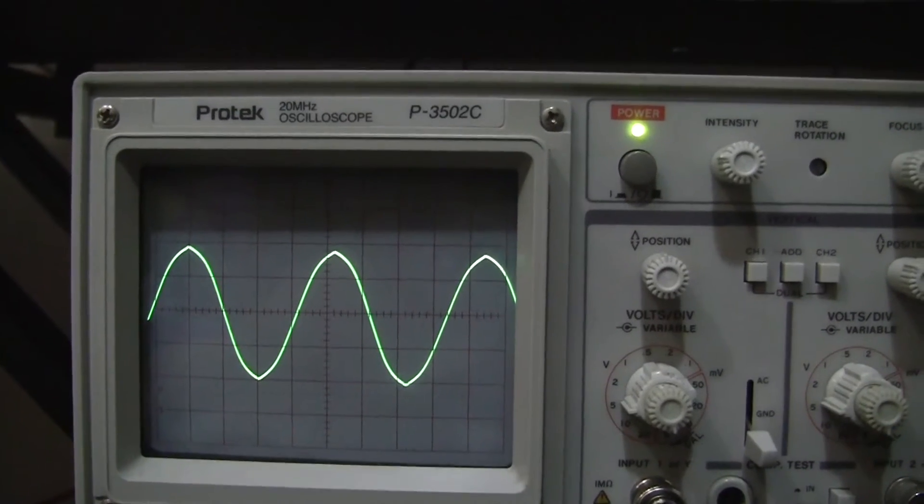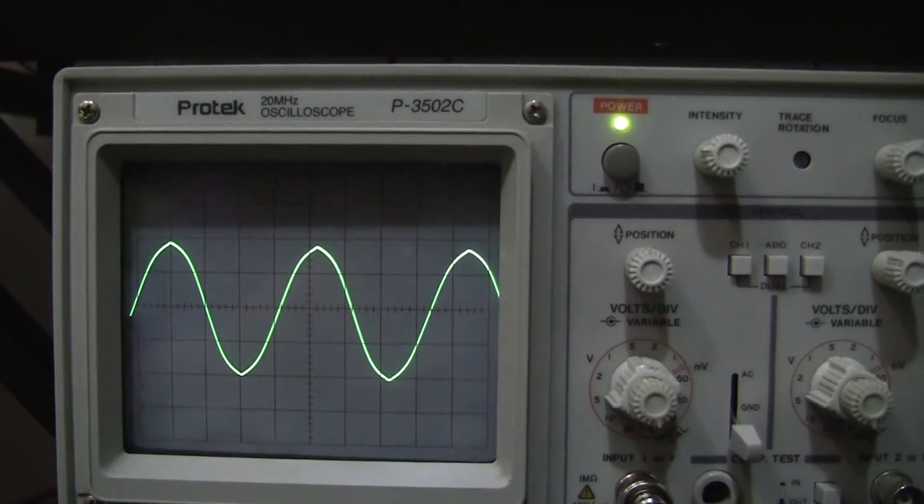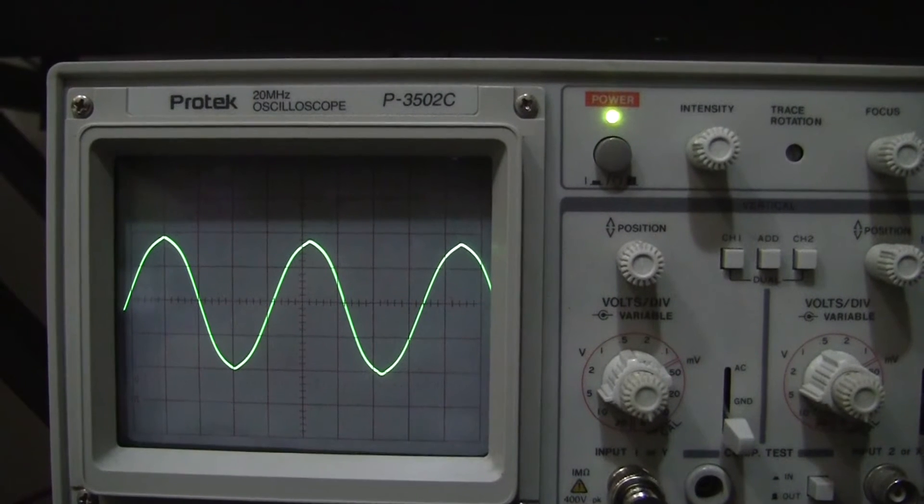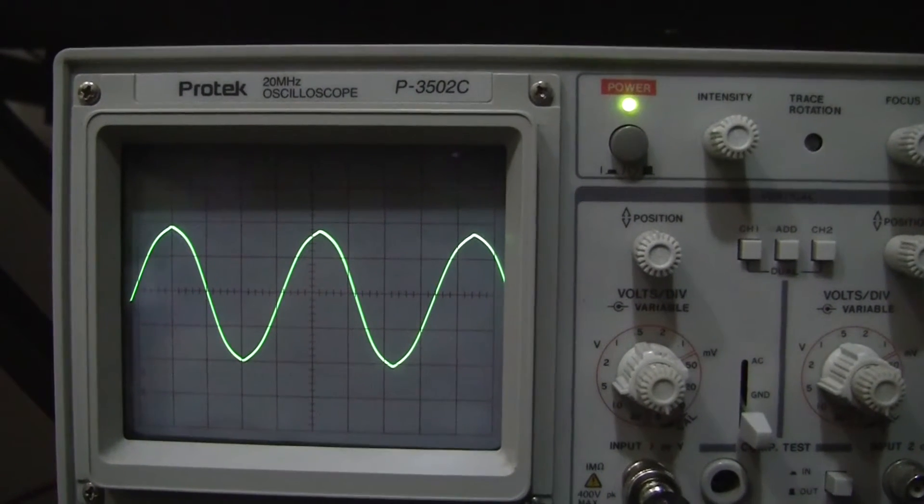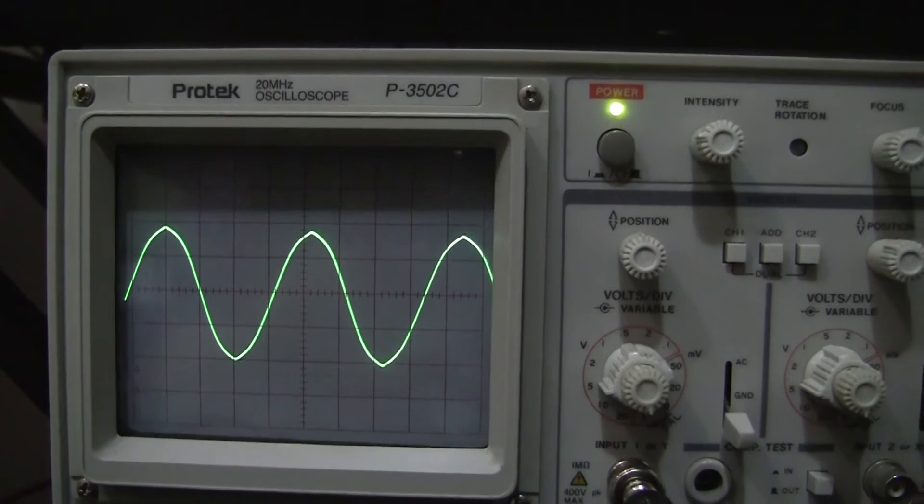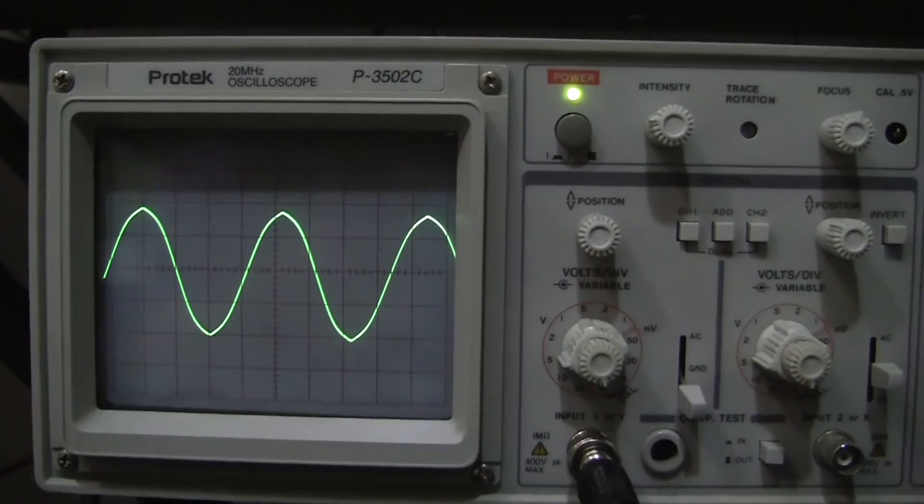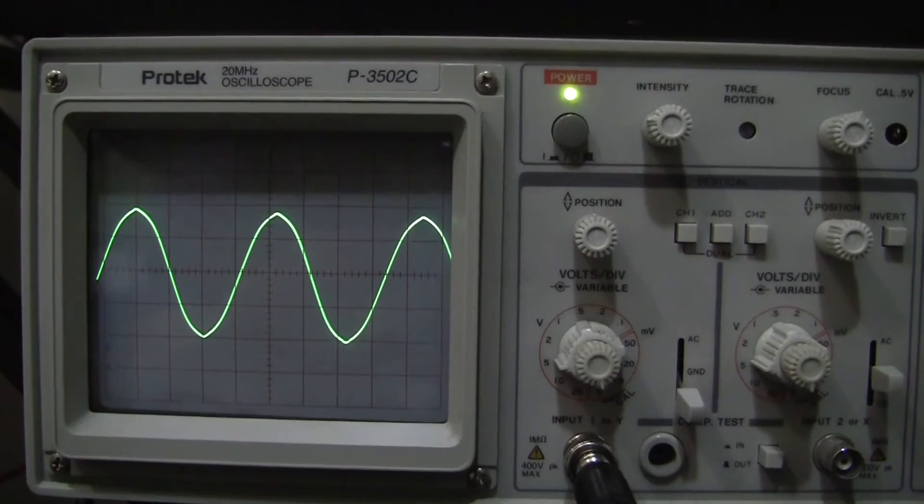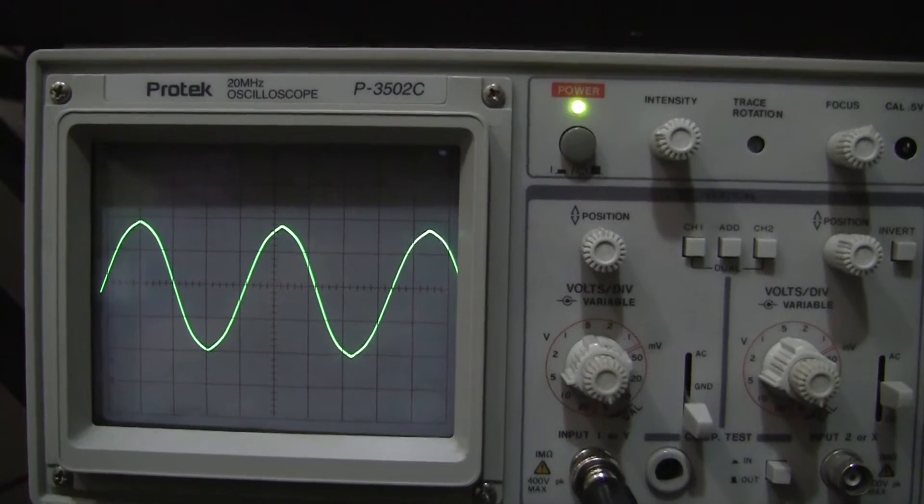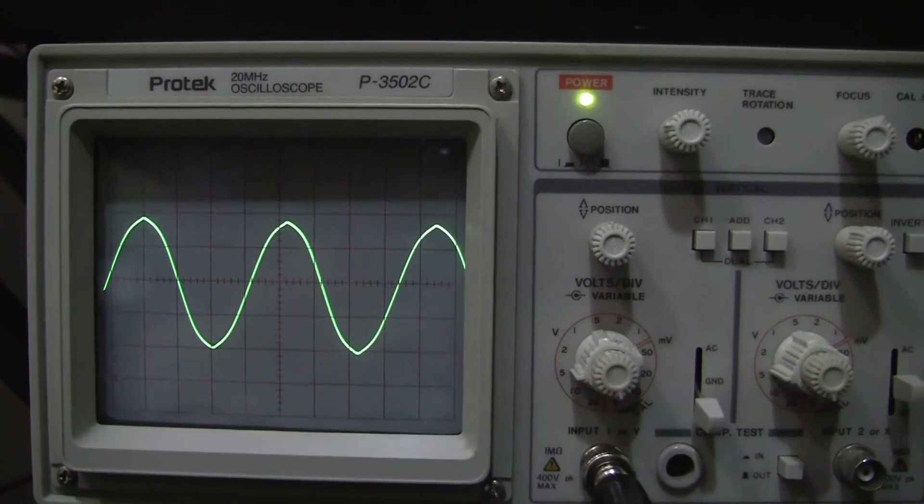Here we're looking at a sine wave which has been amplified 200 percent. So we've got the gain set to maximum. And as you can see in the diagram our input voltage control for the channel is set to 5 volts per division.